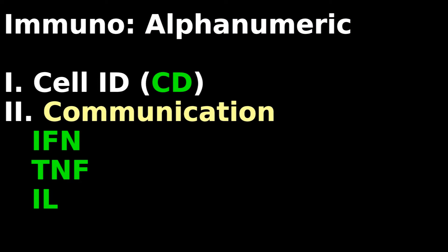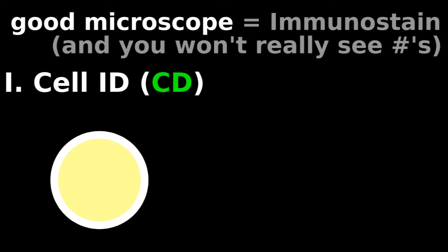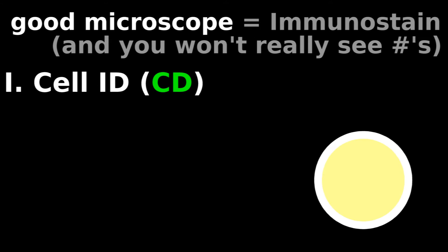Now for alphanumeric cell ID and communication molecules. Two immune cells look about the same, but with a really good microscope you can see that this cell has little number 4s on its surface, while this cell has lots of number 8s.